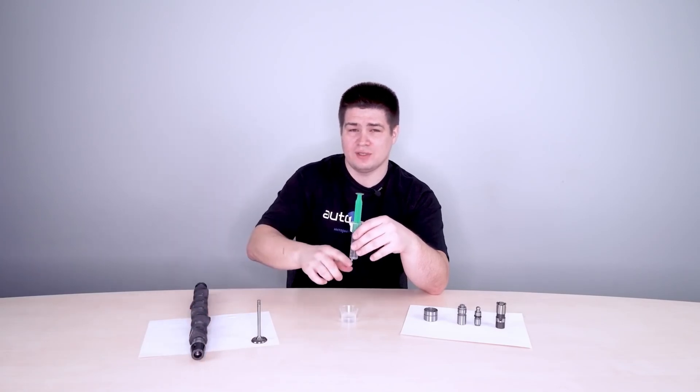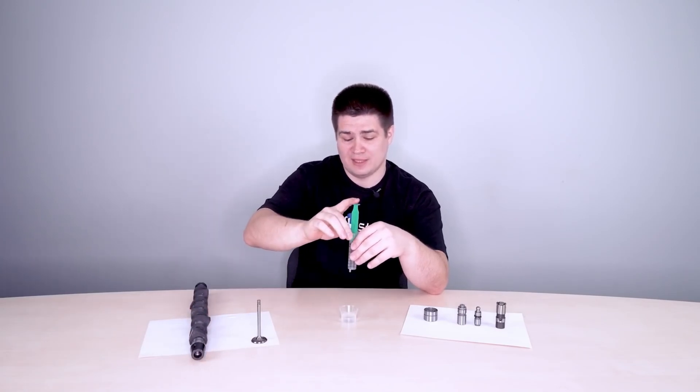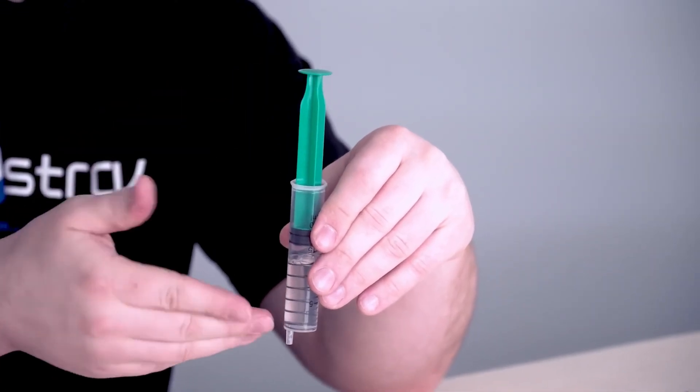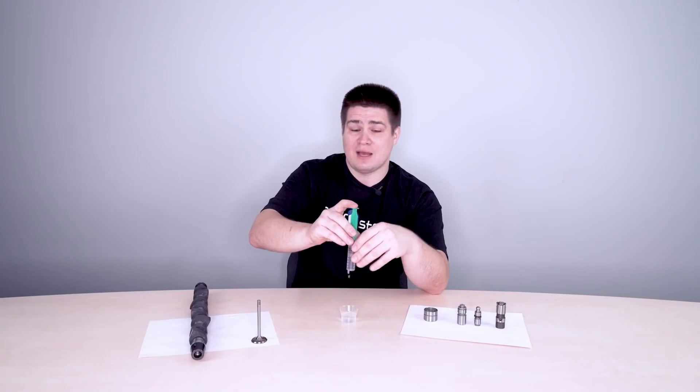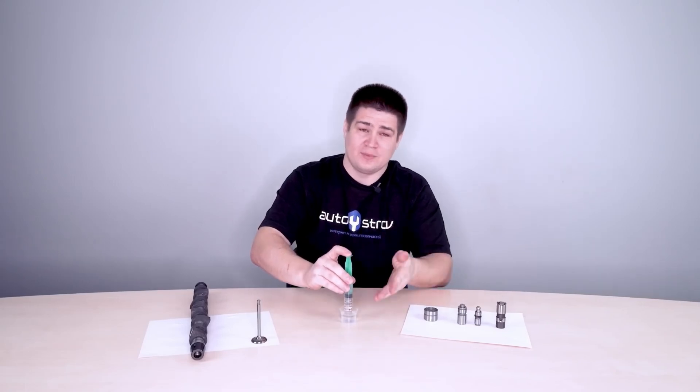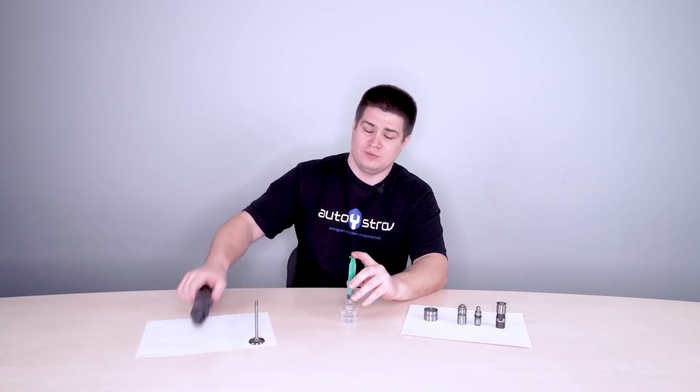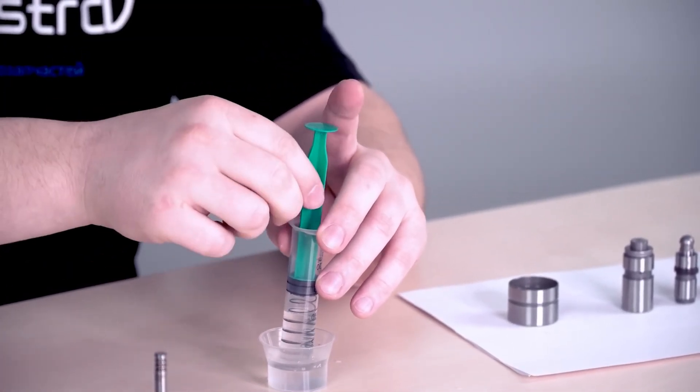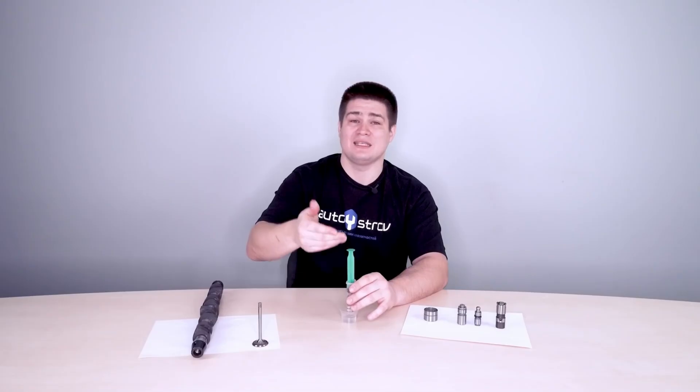So when the cams are pressed, something like this happens. Here is a little oil leaked out, and then the cycle repeats again. When the cam has already turned and went up, then the hydraulic tappet again picks up oil. The spring moves it up and the thermal gap is eliminated.